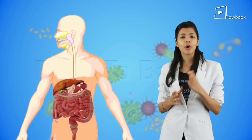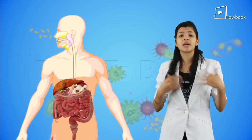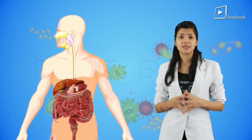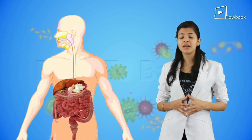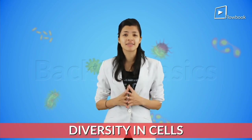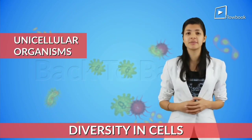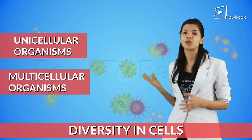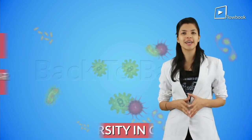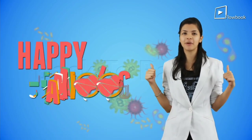For example, the digestion in your body is conducted by the digestive system, which is made up of different types of cells. So, what have we learnt today? We have learnt about the diversity in cells. We have learnt about unicellular organisms and multicellular organisms. So, until next time, happy learning!